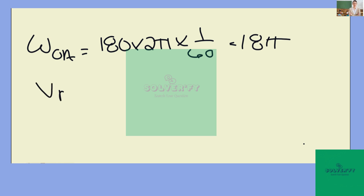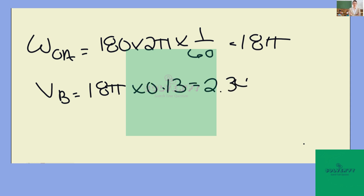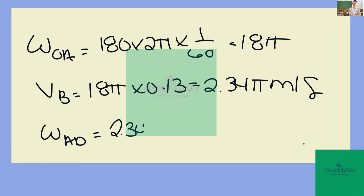Then we want to calculate the velocity at point B. We're going to take 18 pi and multiply it by 0.13 to get 2.34 pi meters per second. Then the angular velocity at AB is going to be 2.34 pi divided by 0.36, which will give us 6.5 pi.